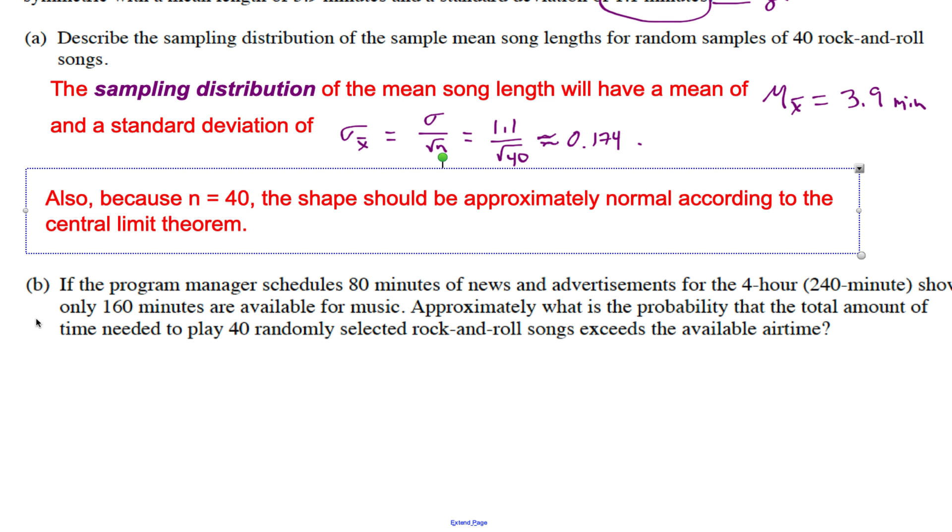Next part: if the program manager schedules 80 minutes of news and advertisements for the four-hour show and only 160 minutes are available for music, approximately what is the probability that the total amount of time needed to play 40 randomly selected rock and roll songs exceeds the available airtime? Sometimes students read this and think it's a probability question, but it's really just playing off of what we did up here. If you're looking at a question and you're like, I don't know what direction they want me to go, go back to this.